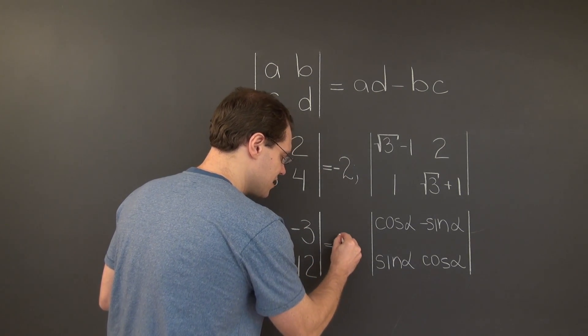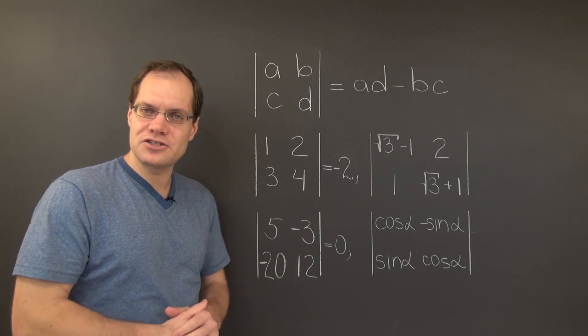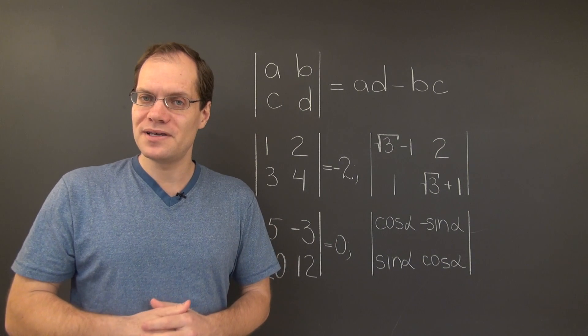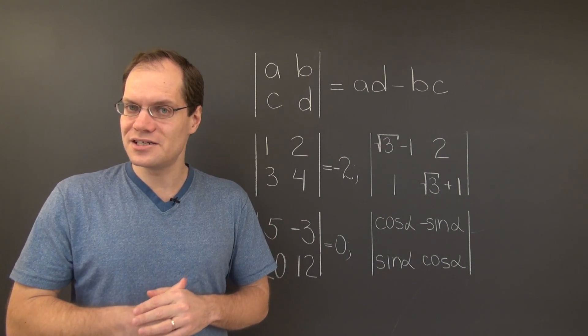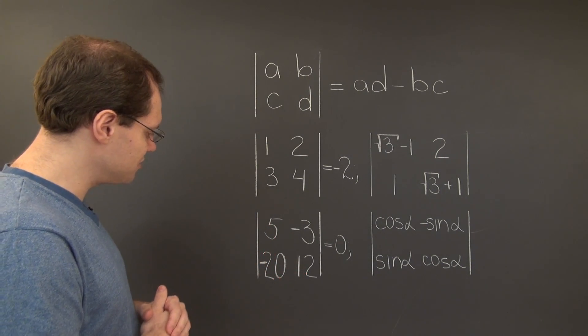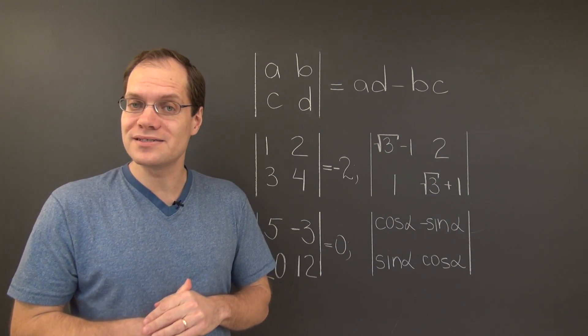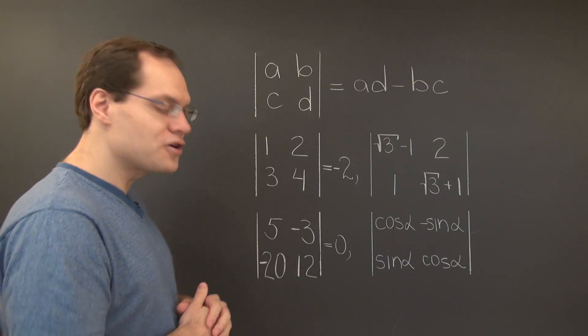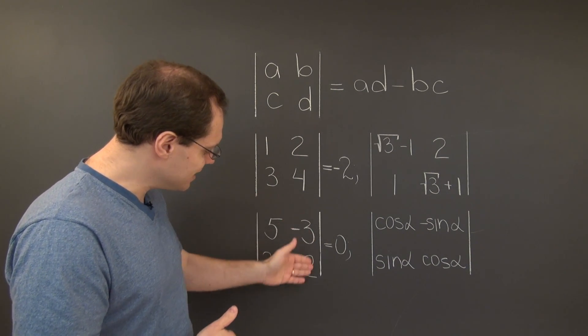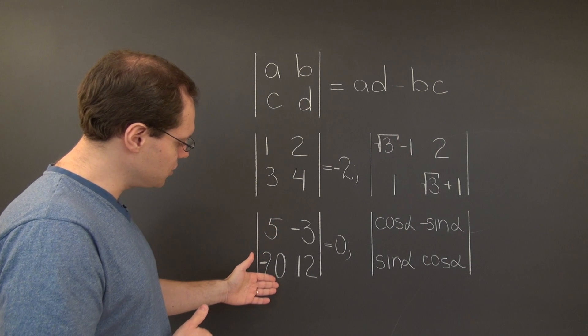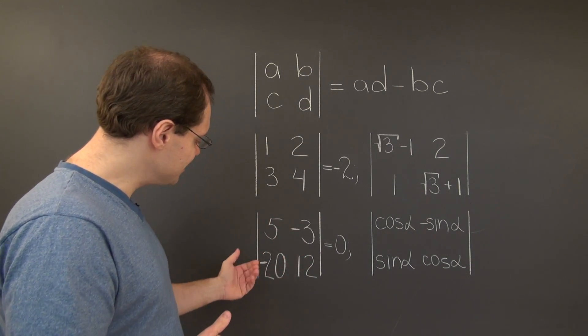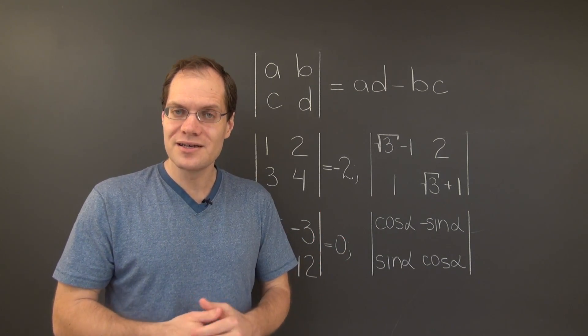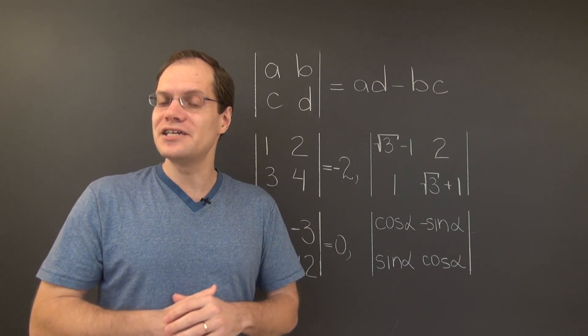In this case, the determinant tells us that the columns are linearly dependent. Now that we know the determinant is 0, we should take a second look and figure out the relationship. Upon second look, we notice these columns are in proportion 5 to negative 3. The second column is negative 3 fifths of the first column. Perhaps it was the determinant that helped us see that relationship.